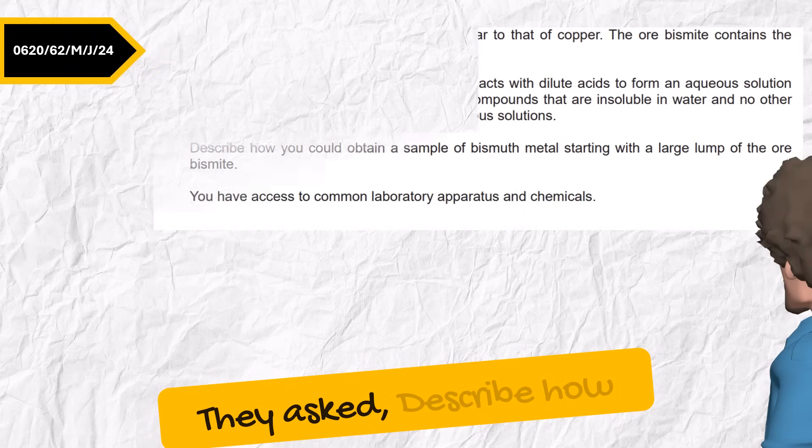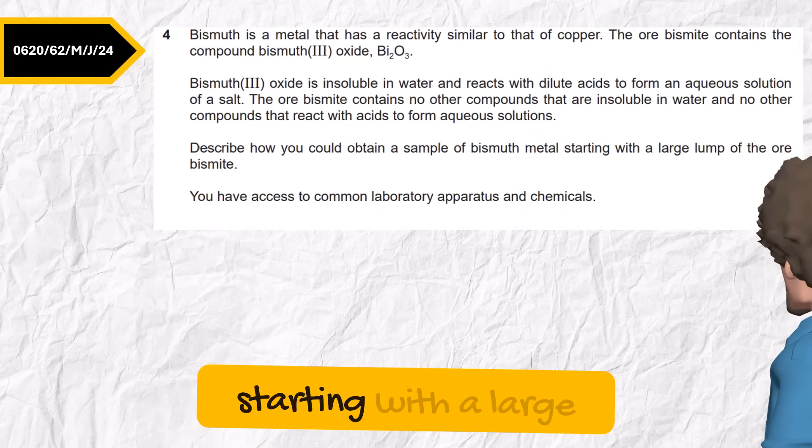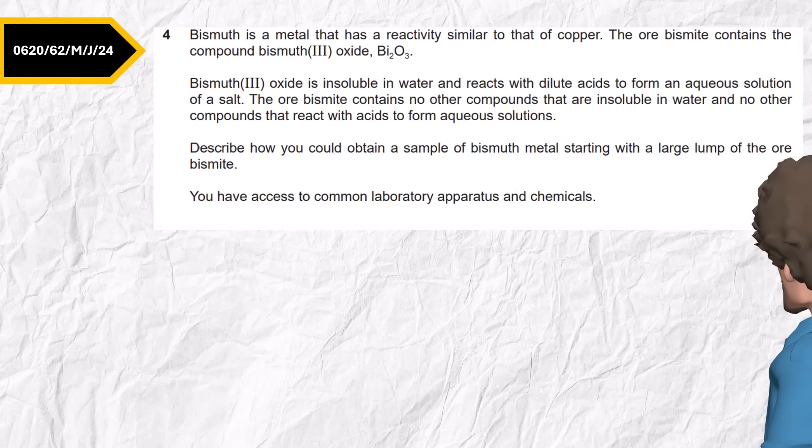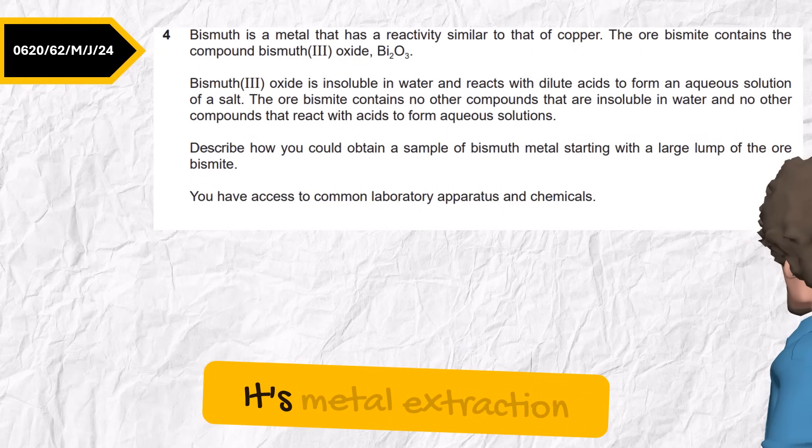June 2024, variant 2, question 4. They asked, describe how you could obtain a sample of bismuth metal starting with a large lump of the ore bismite. Here I'm getting bismuth metal out of an ore. This is easy. It's metal extraction.